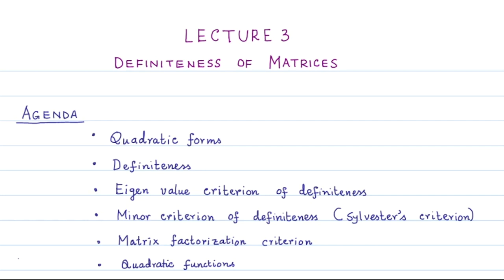This lecture is majorly on the topic of definiteness of matrices or definiteness of quadratic forms. Towards this, we shall first define the notion of quadratic forms, then the idea of definiteness of quadratic forms. Thereafter, three criteria to check definiteness of quadratic forms will be discussed: the eigenvalue criterion, the minor criterion, and the matrix factorization criterion. Towards the end of this lecture, we shall also discuss the notion of a quadratic function, which is the addition of a quadratic form with an affine function. The notions of affine functions and linear functions will also be discussed in this lecture.